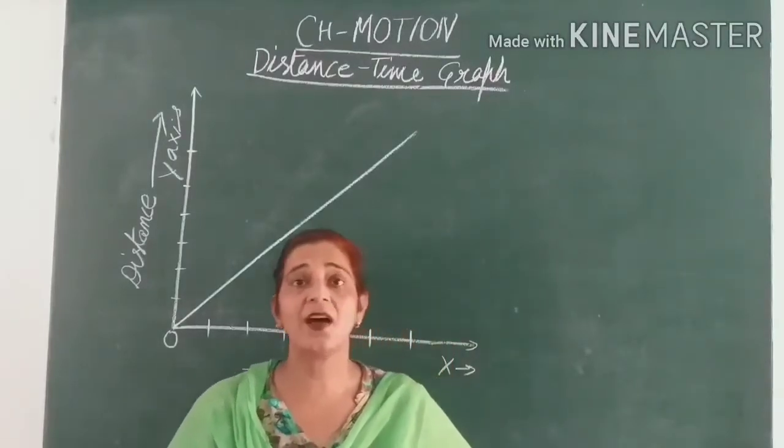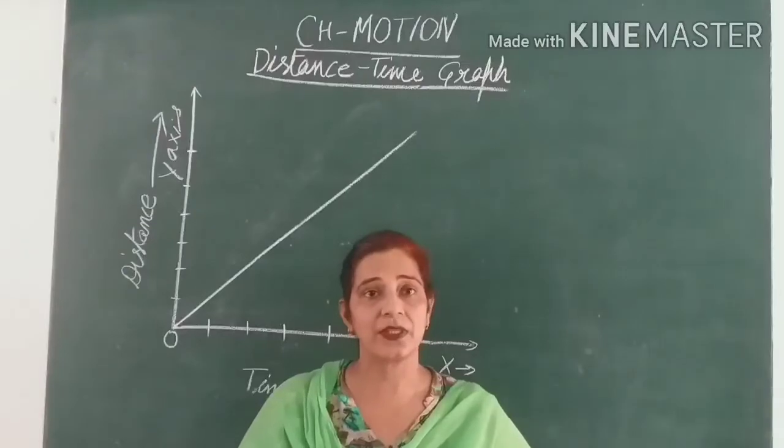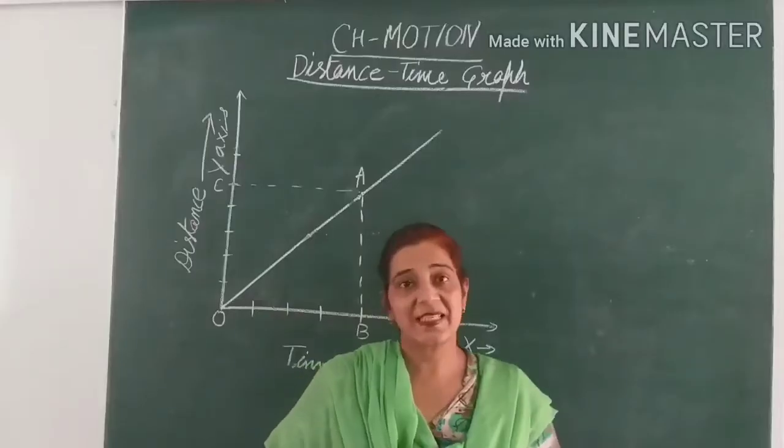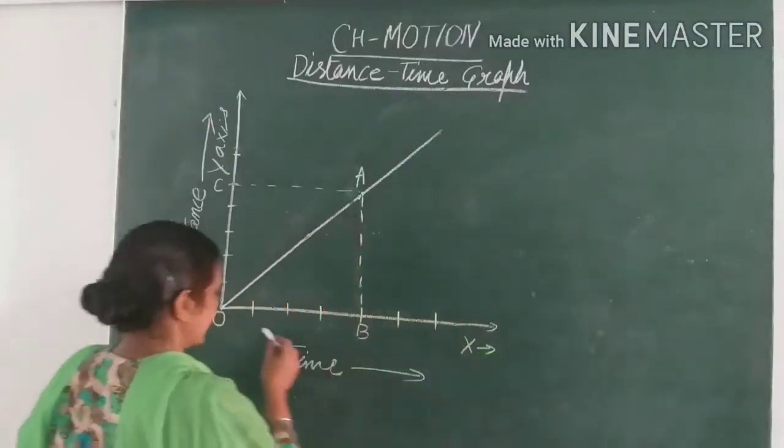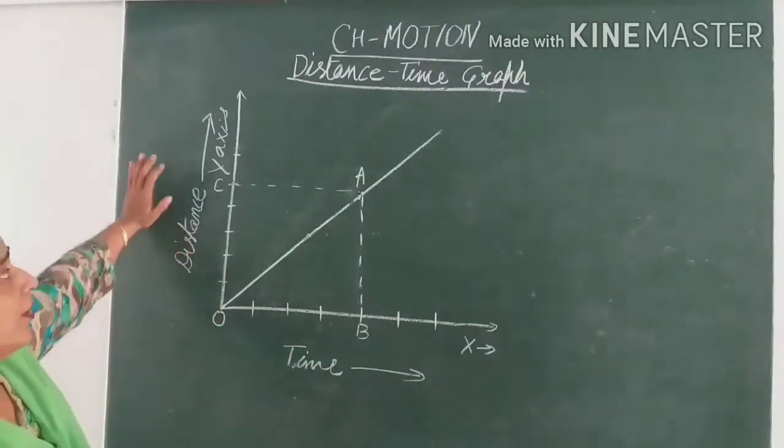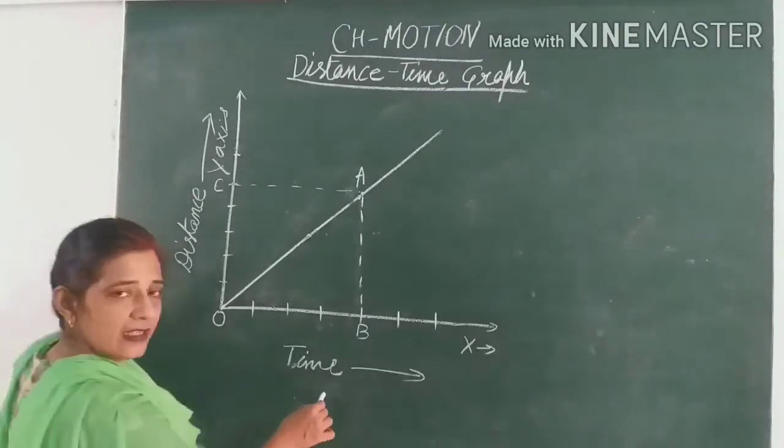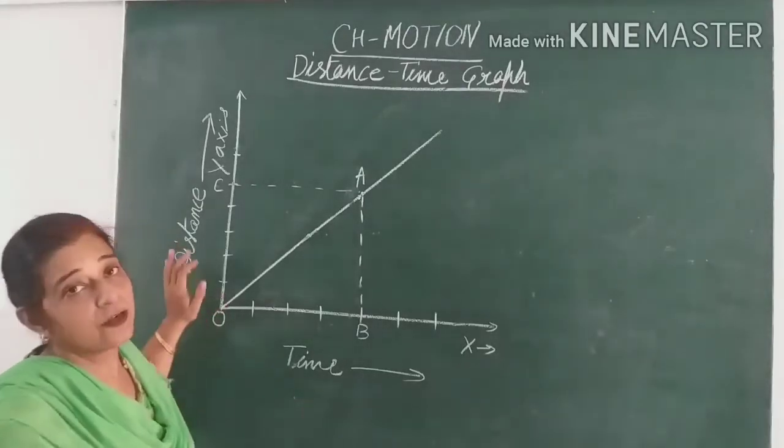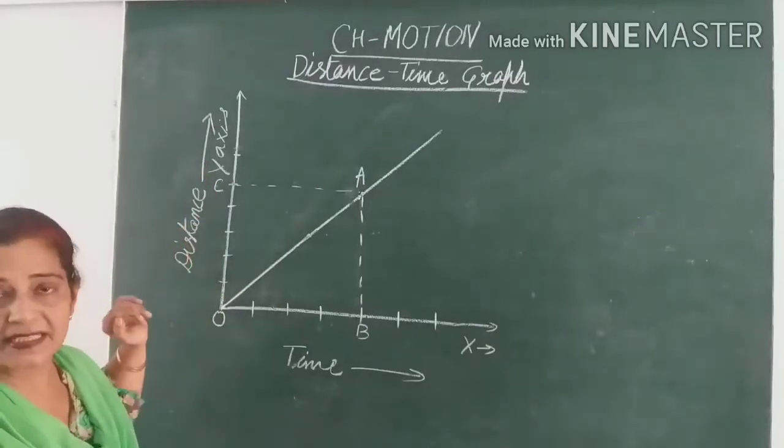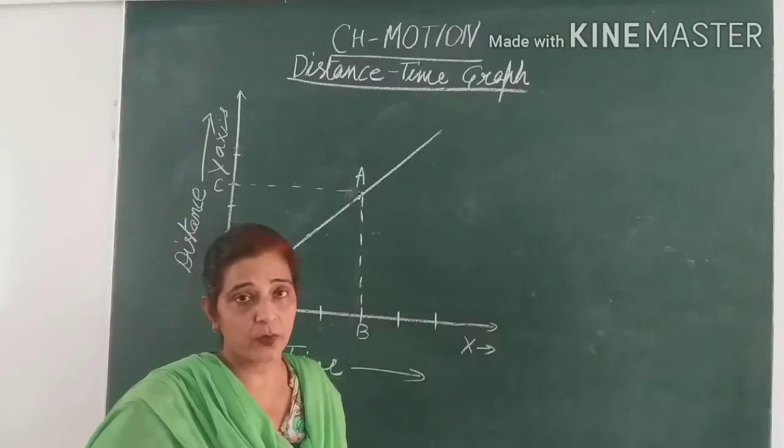Distance-time graph gives us the speed of a body at a particular point. Now this is distance-time graph. Here on the x-axis we have time and distance will be taken on y-axis. We will take velocity-time graph later where time again will be on x-axis and velocity will be on y-axis. Distance-time graph actually gives us the speed of the body.